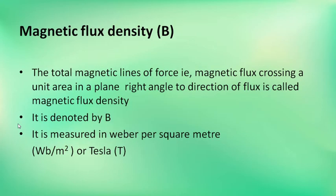Magnetic flux density is the total magnetic lines of force — that is, the magnetic flux crossing a unit area in a plane at right angles to the direction of flux. It is called magnetic flux density.